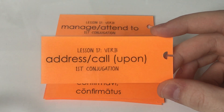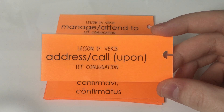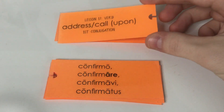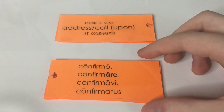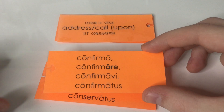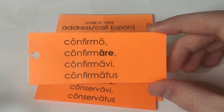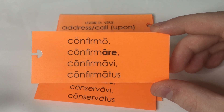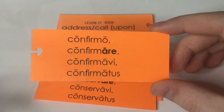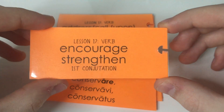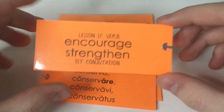The reason why 'upon' is in parentheses is because it's optional — you don't actually have to add it into your translation. And then we have conformo, confirmare, confirmavi, confirmatus. When you confirm something, you are basically encouraging or strengthening that idea.